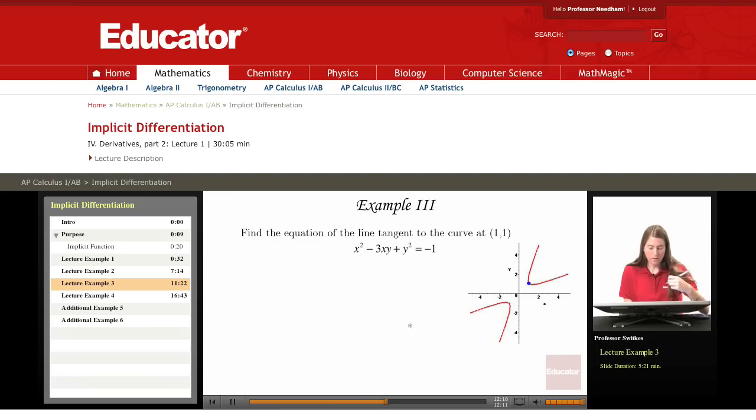So to find the equation of that line, eventually we want to be able to use point slope form for the equation of a line. We have our point, so our point is (1,1).